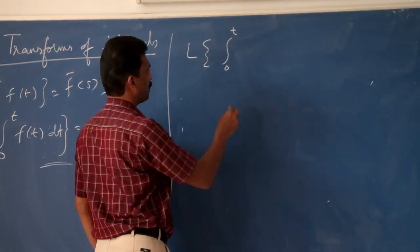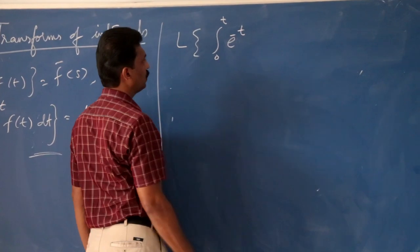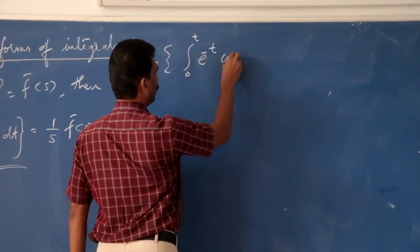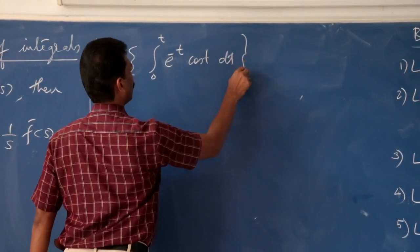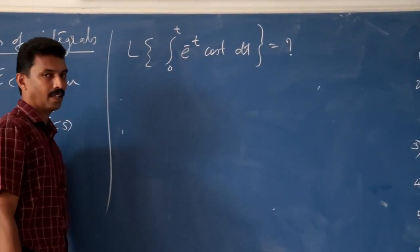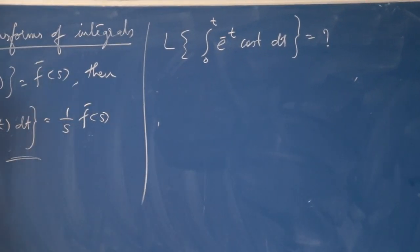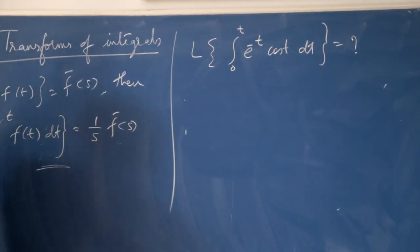Next, we will find the Laplace transform of the integral from 0 to t of e^(−t)·cos t dt.